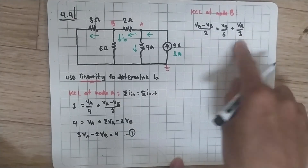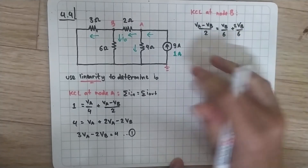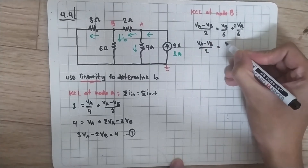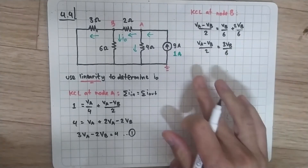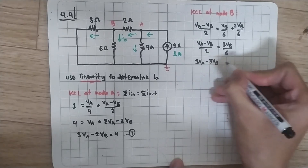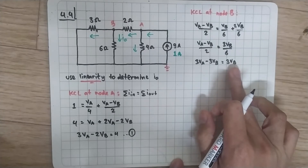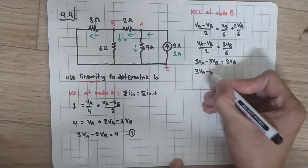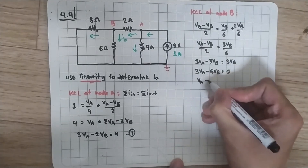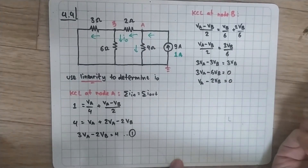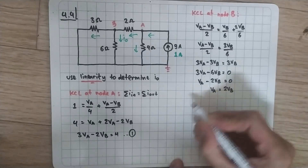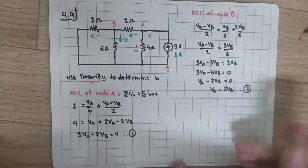We can rewrite VB over 3 as 2VB over 6, so the right side becomes 3VB over 6. Multiplying both sides by 6 gives 3VA - 3VB = 3VB, then moving terms: 3VA - 6VB = 0, or VA - 2VB = 0. Therefore VA = 2VB. This is equation number 2.